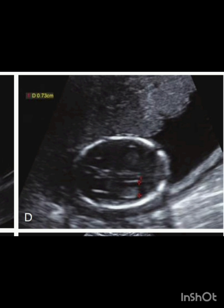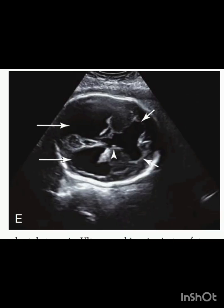This axial image of the fetal head at 18 weeks shows a normal-appearing lateral ventricle measuring 0.73 centimeters. On follow-up ultrasound of the same fetus at 34 weeks, both the lateral and third ventricles are dilated. In this slightly different scan plane, there is no evidence of a dilated fourth ventricle in the anterior portion of the posterior fossa, indicated by the short arrow, confirming aqueductal stenosis.